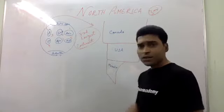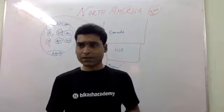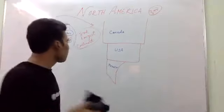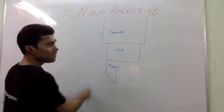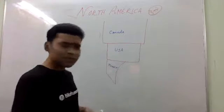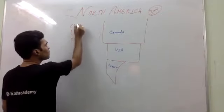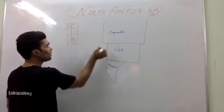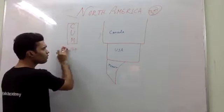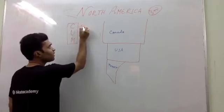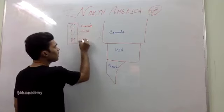Let's discuss these countries and their political and physical features. To memorize these countries, just remember C-U-M — just like CUM dot com. So C is Canada, U is USA, and M is Mexico.